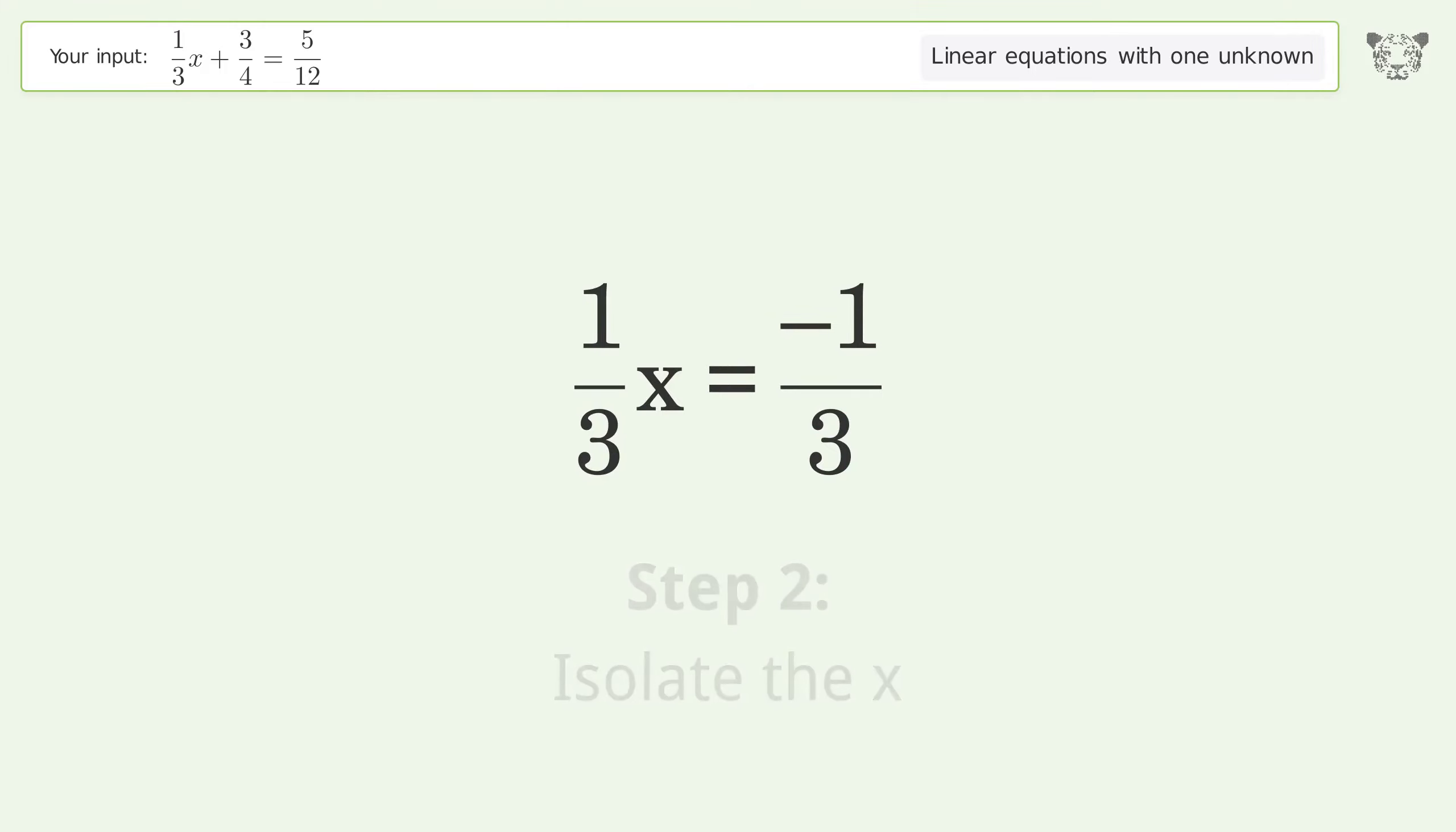Isolate the x. Multiply both sides by inverse fraction 3 over 1.